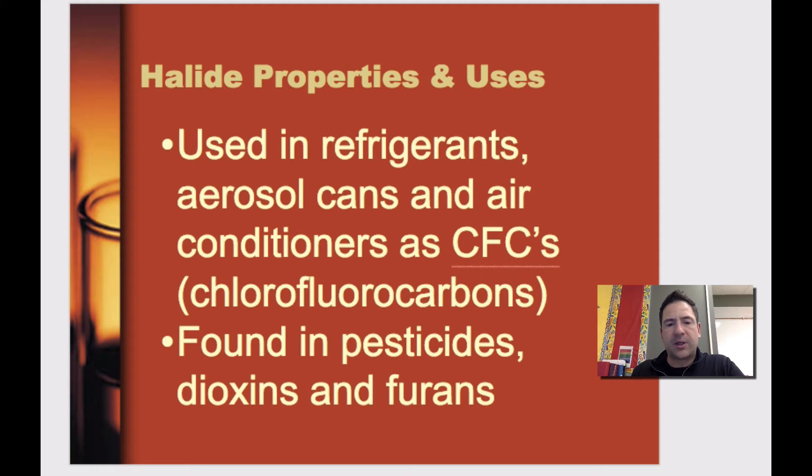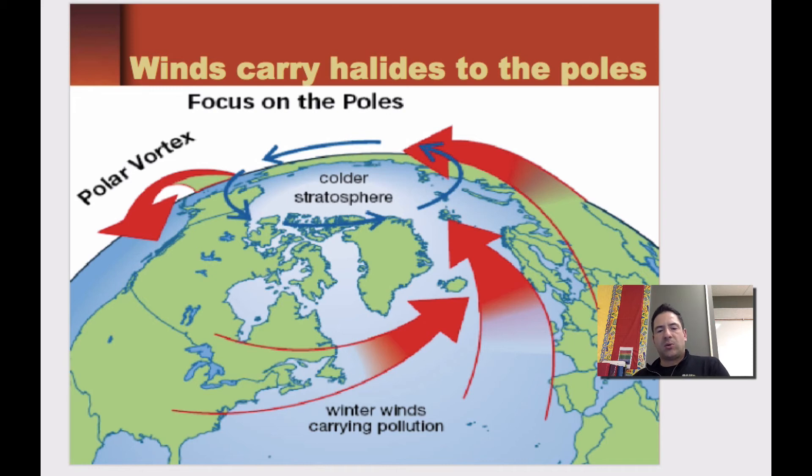One thing we have to look at is wind patterns. What happens with these halides is eventually they end up in the poles. They get swung up to the north and swung down to the south. You can see in this diagram, as the air currents move around in different weather patterns, move around a colder stratosphere, eventually these halides will end up moving upwards. They're actually responsible for ozone depletion, which allows harmful UV radiation to enter the earth, causing things like cancer and mutations.